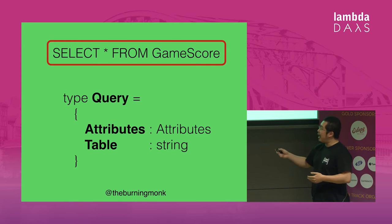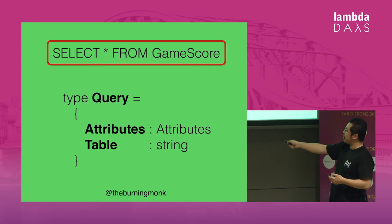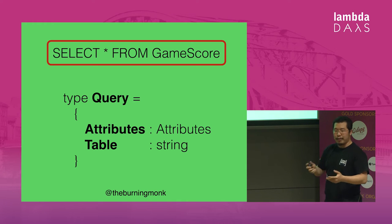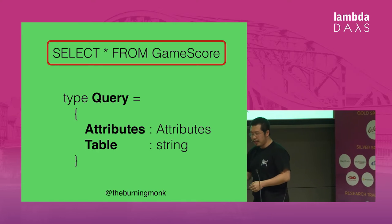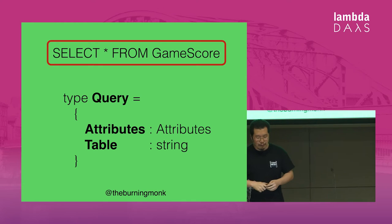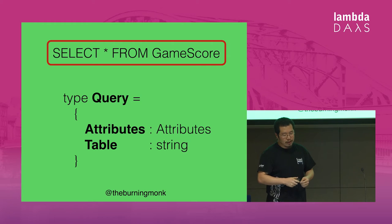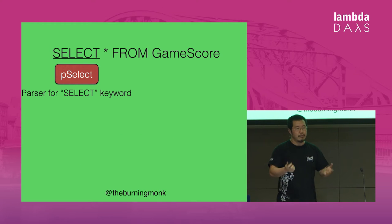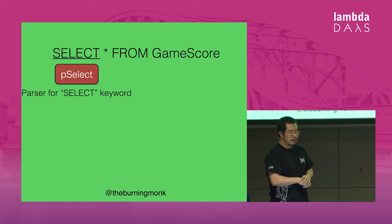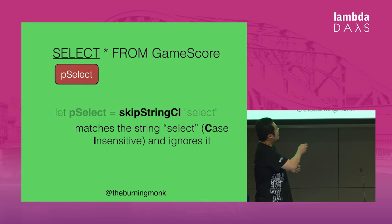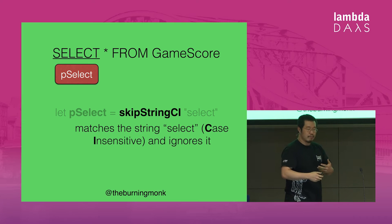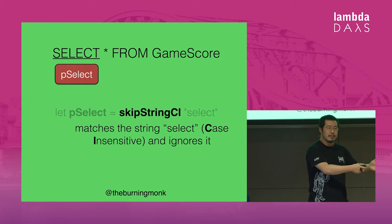For the whole query, I can represent it using a simple record type, which you can think of as a lightweight class where the fields are immutable. I'll start by writing a parser for the SELECT keyword using a built-in FParsec parser called skipStringCI, which matches a given string in a case-insensitive way and ignores the matched value. I can do the same to write a parser for the FROM keyword.